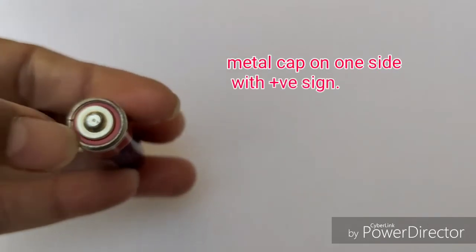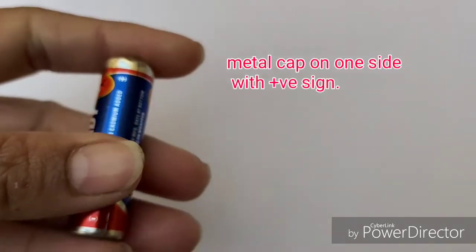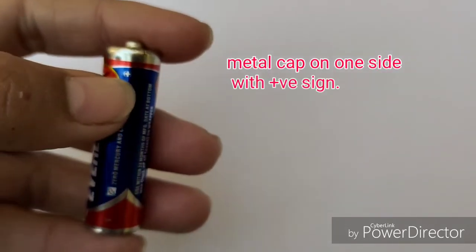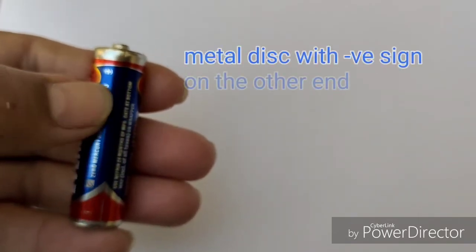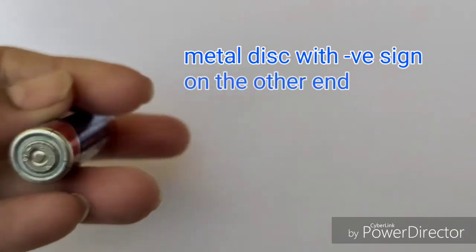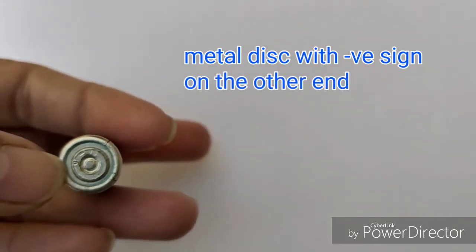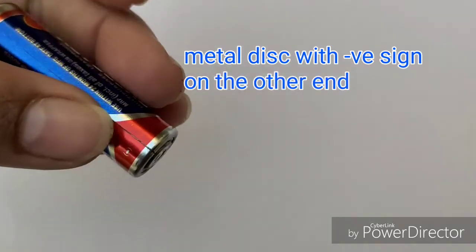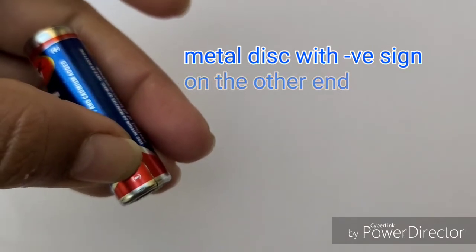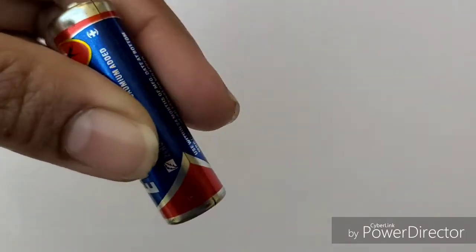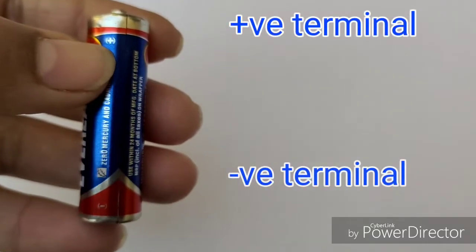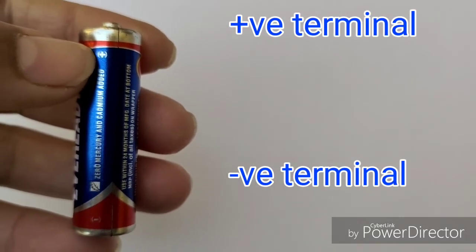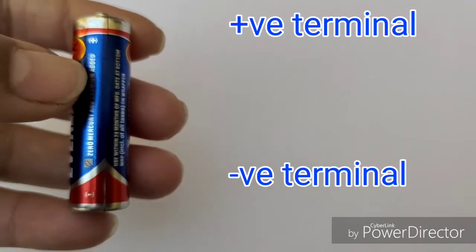It has a metal cap on one end with the positive sign and a metal disc with the negative sign on the other end. The end with the positive sign is known as the positive terminal, and the end with the negative sign is known as the negative terminal.